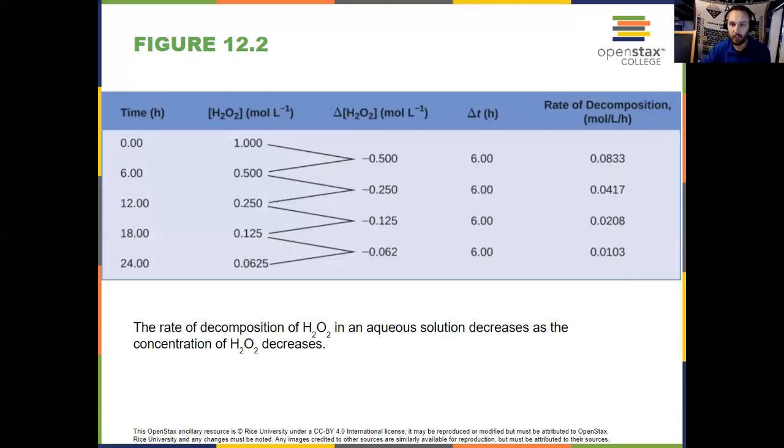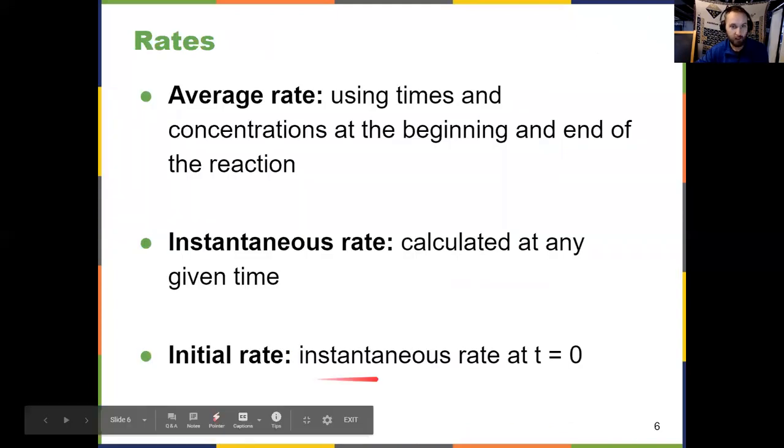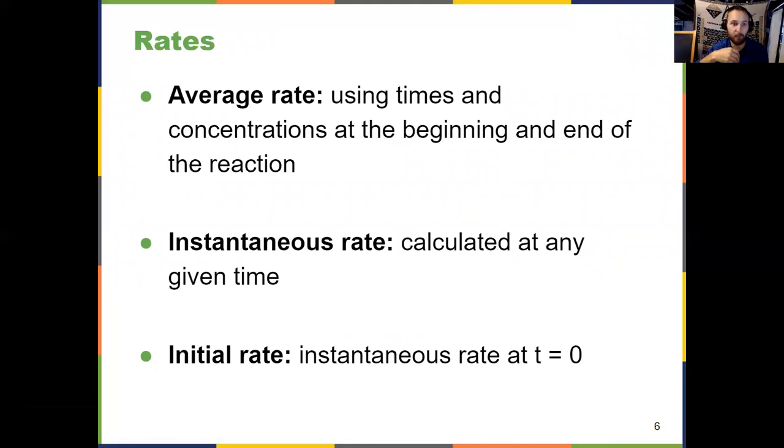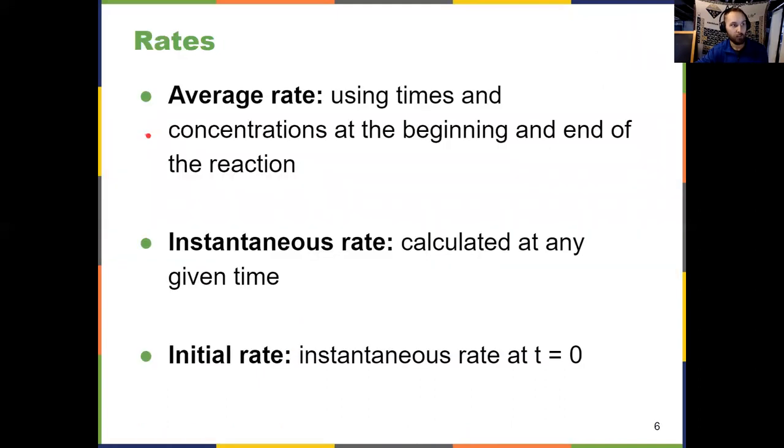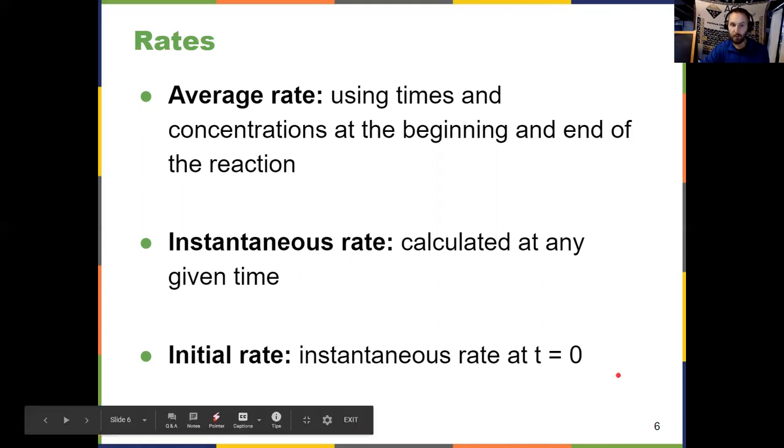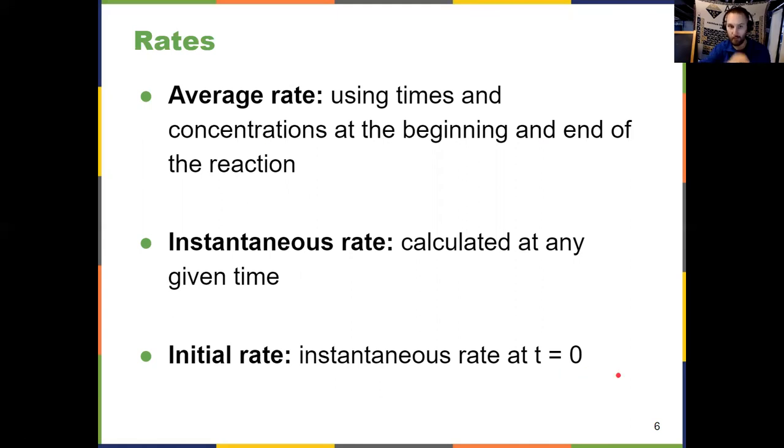Because there are many different types of rates that you should know. These are the three here on slide six that I want you to understand, both what they mean and how to determine them graphically. Most times we're going to be dealing with average rates, where you use the times and concentrations from the start and the end of the reaction. That's compared to an instantaneous rate, which is calculated at any given time. And then the initial rate, which is an instantaneous rate specifically at time zero. So as soon as the reaction begins, what's the rate? That's the initial rate.